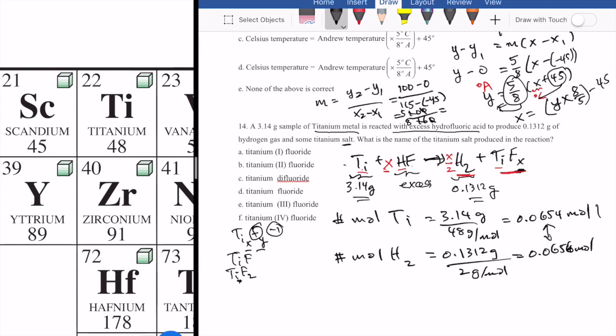The stoichiometric relationship between these two can be calculated with respect to each other. If I want the number of moles of H2, I can start with 0.0654 moles of Ti and multiply by the moles of Ti over the moles of H2. That will give me the number of moles of H2. I already know the moles of H2 is 0.0656. The mole ratio is the coefficient, so the moles of H2 in my coefficient is x over 2, and the moles of Ti is 1.